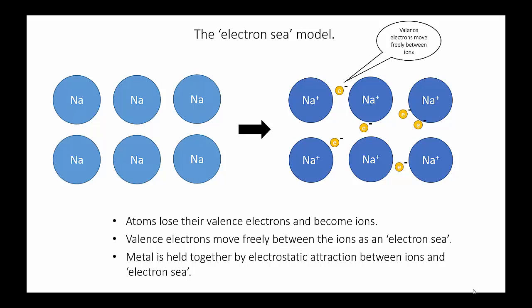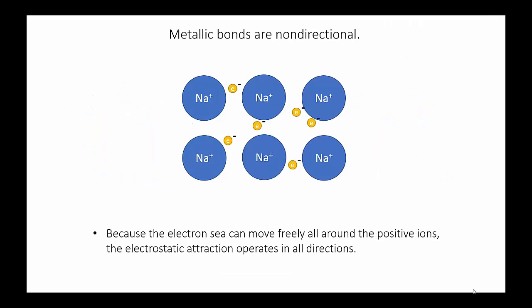As a consequence, there's an electrostatic attraction between the metal cations and the sea of negatively charged electrons. And because the electron sea is able to move freely all around the metal cations, we say that this form of bonding is non-directional, because the electrostatic attraction operates in all directions.